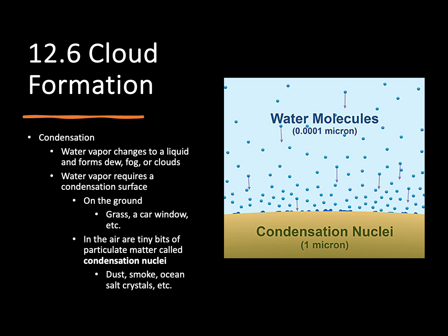Our first step of forming clouds is to have some form of condensation occur, and this is where we're going to have water vapor changing states into a liquid, just like we saw on the side of that really cold bottle of soda. But in order to do this, we need a condensation surface — we need all of that water vapor to have a solid that it can condense onto.